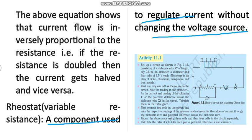Next is Activity 11.1. In this activity, we have an XY Nichrome wire, which is an alloy made of nickel, chromium, manganese, and iron. It is used in an ammeter circuit and voltmeter circuit. We take readings with 1 cell, then 2 cells, then 3 cells and 4 cells, noting down the voltmeter and ammeter readings each time.